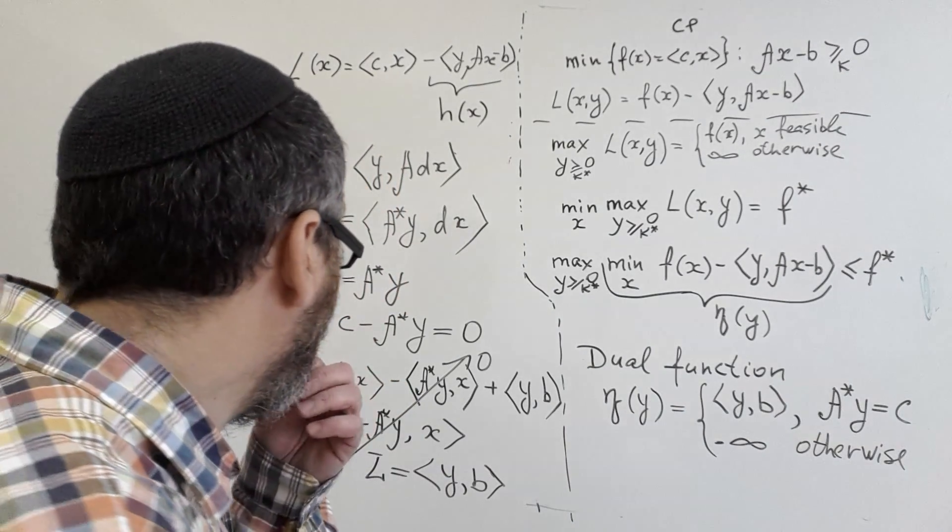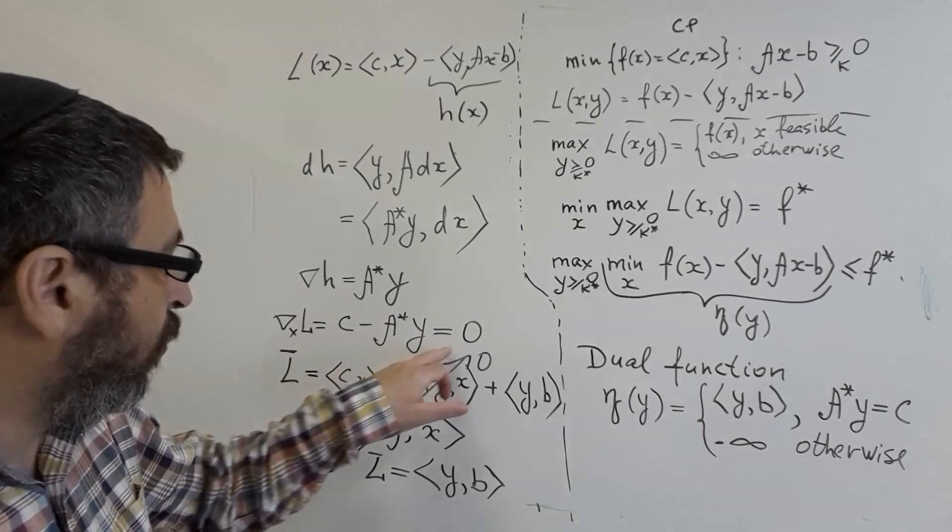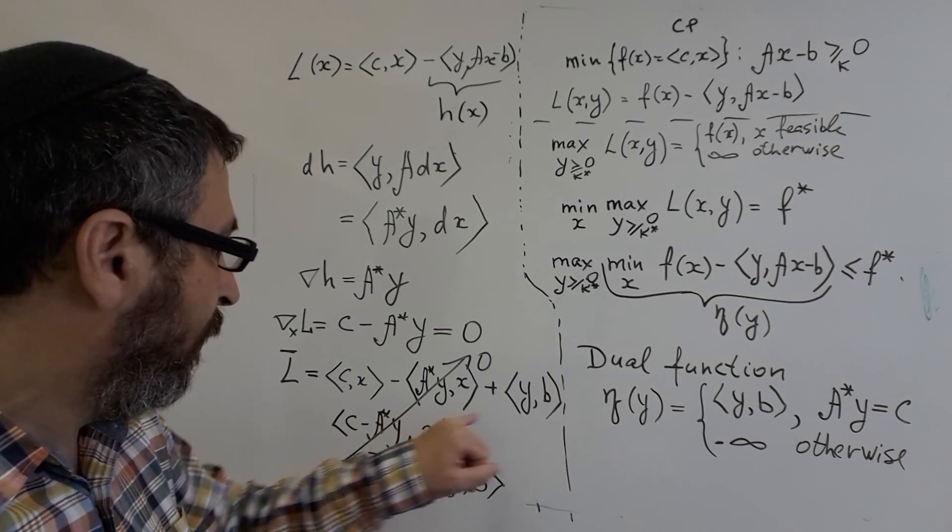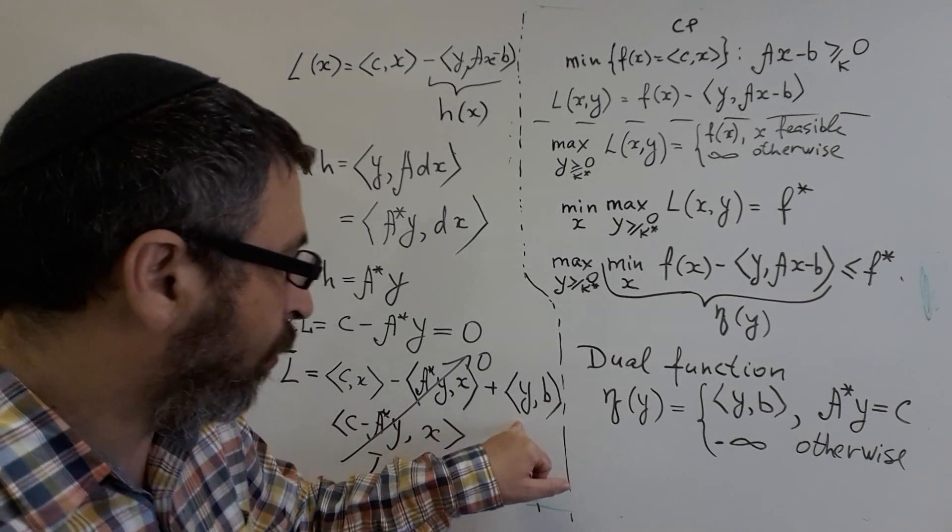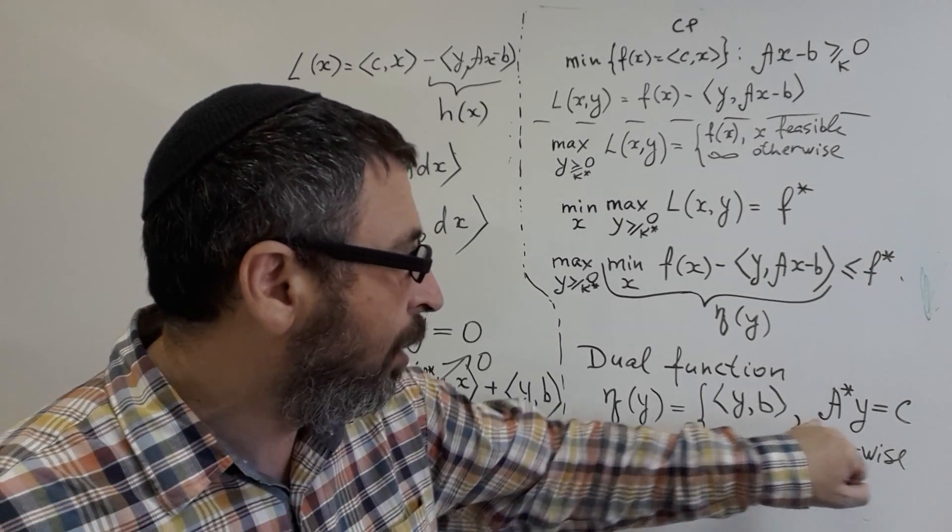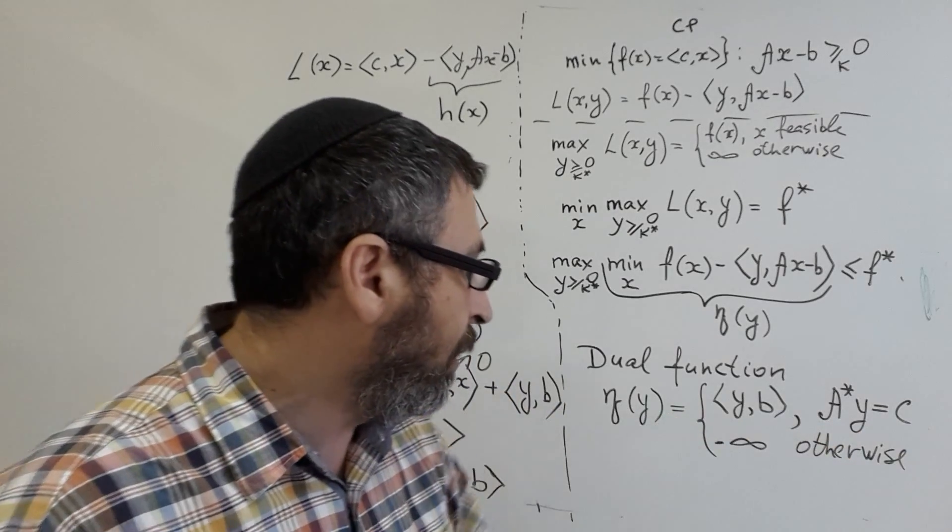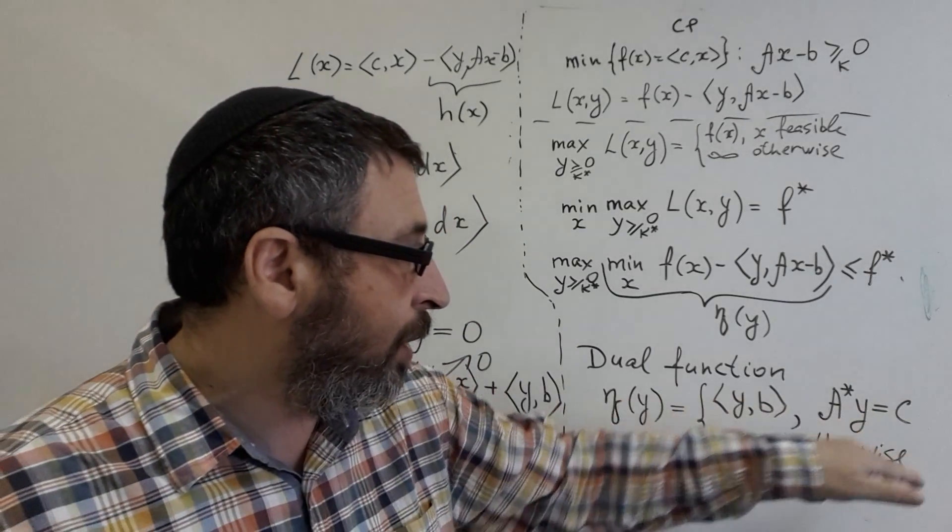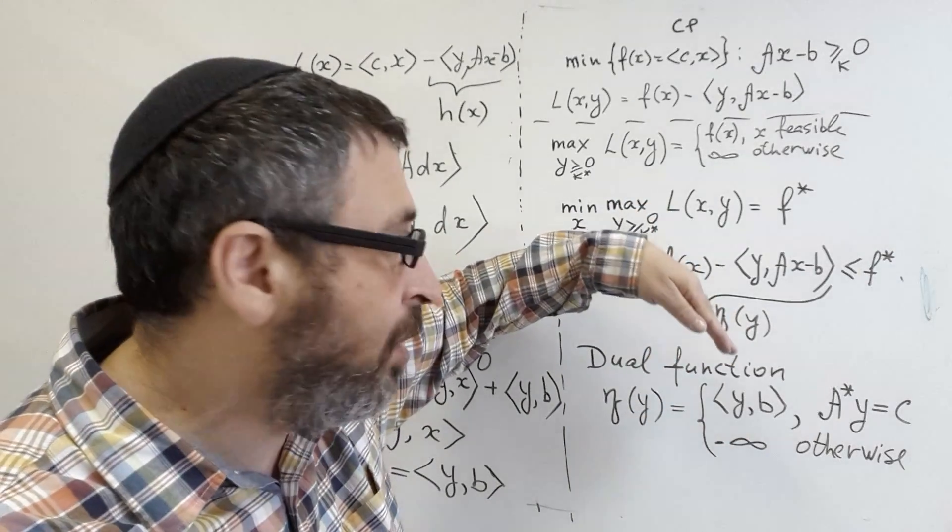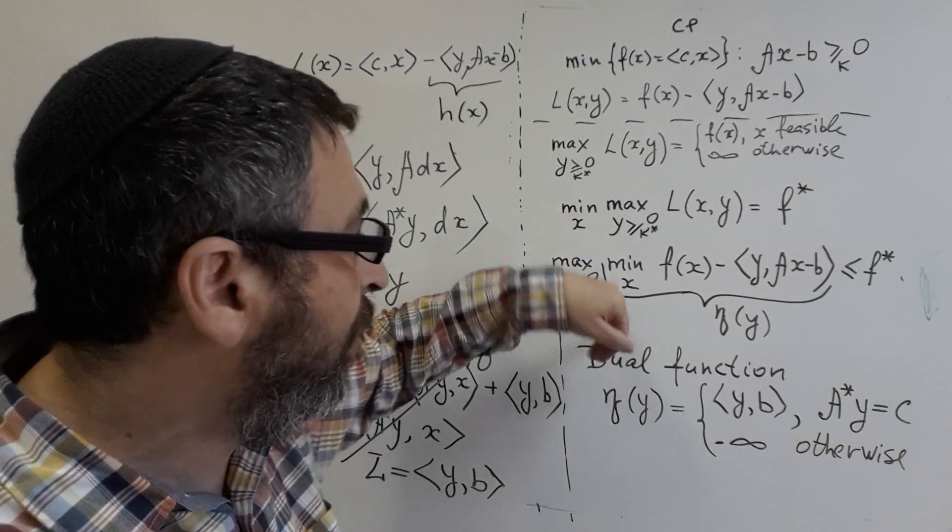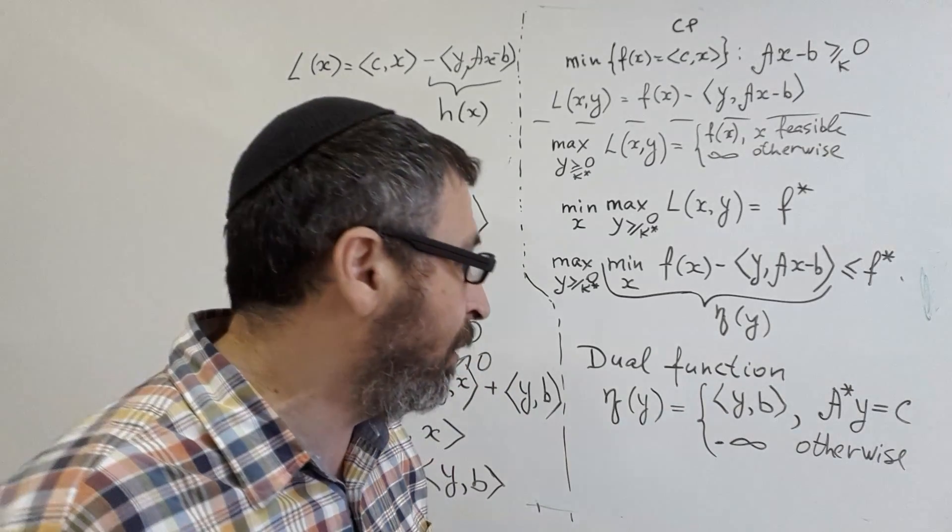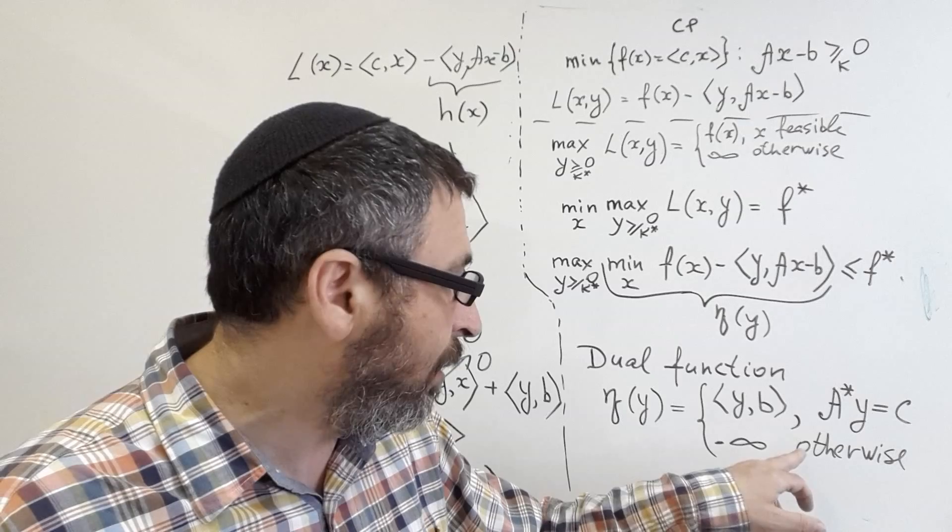So in summary, when this equality is satisfied, the value of minimizer will be just y inner product of y with B, and this is our dual function. So dual function is y inner product with B when A adjoint y is equal to C. And if this equality is not satisfied, this linear function will have some slope, non-zero slope, and minimization of x will bring us to minus infinity. So this is minus infinity otherwise.